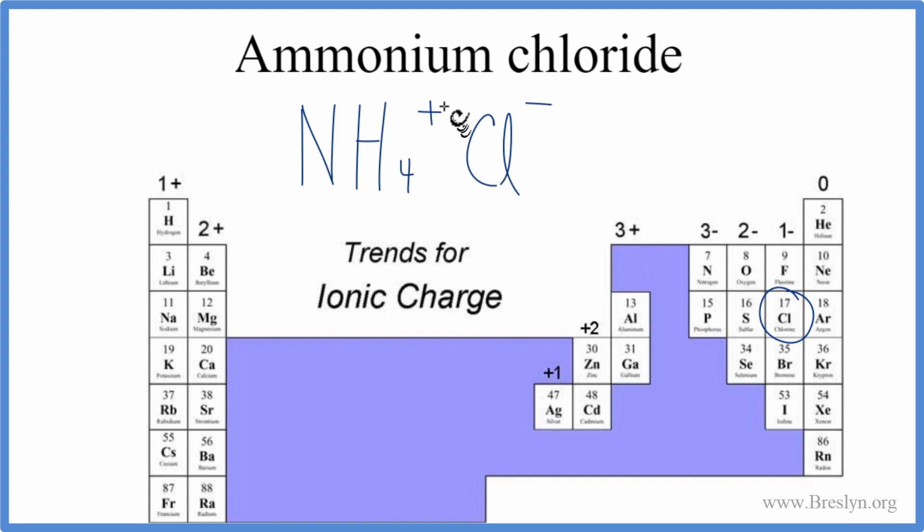And now we have our charges. And we can see that the net charge, the plus and the minus, they cancel out. So the net charge is zero. And that makes this the formula for ammonium chloride.